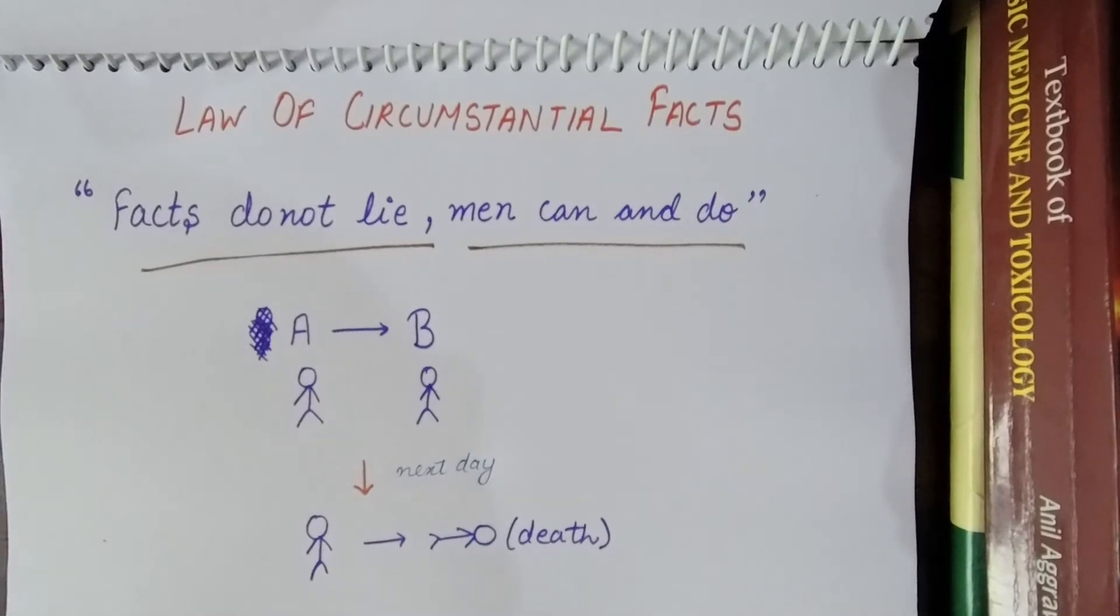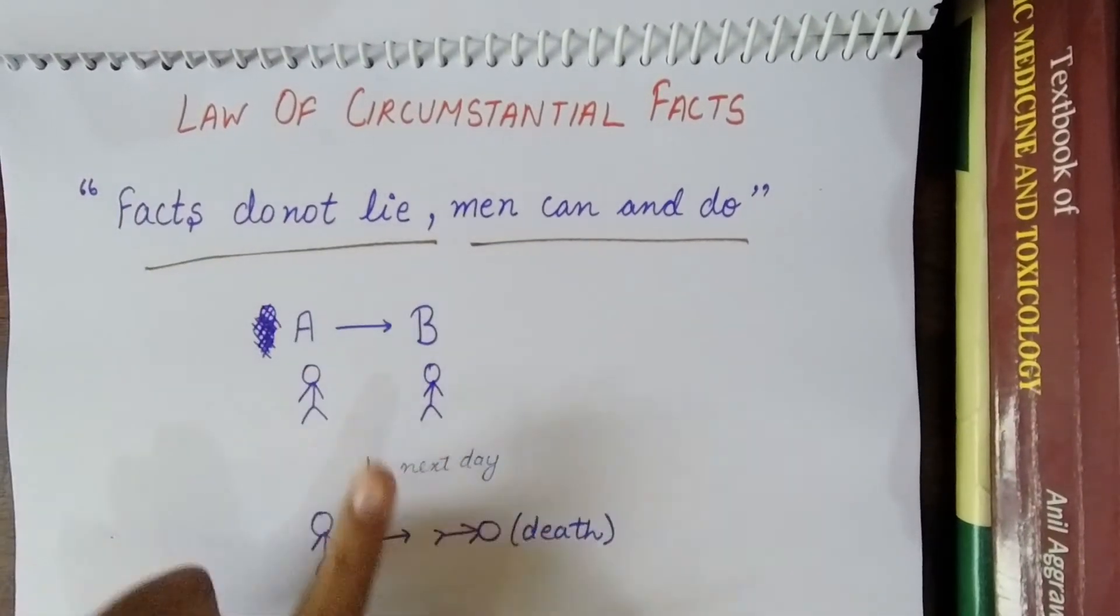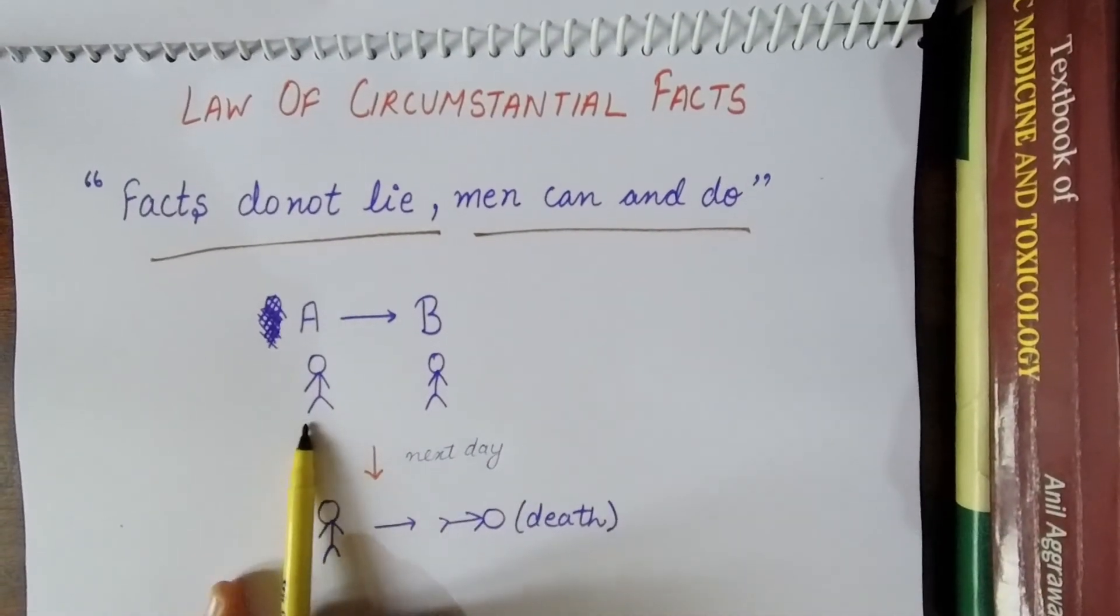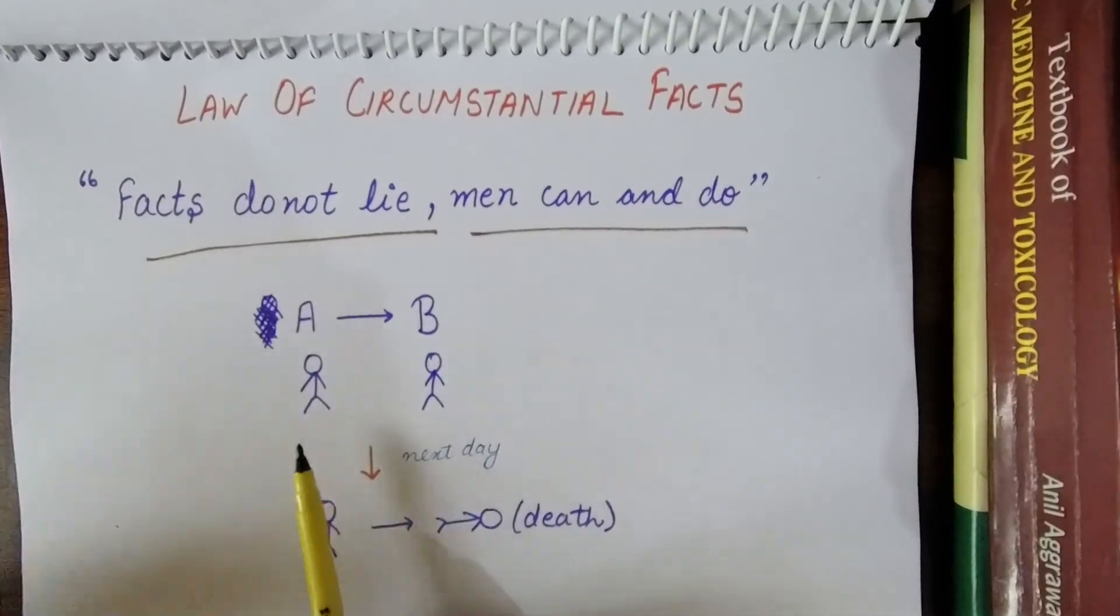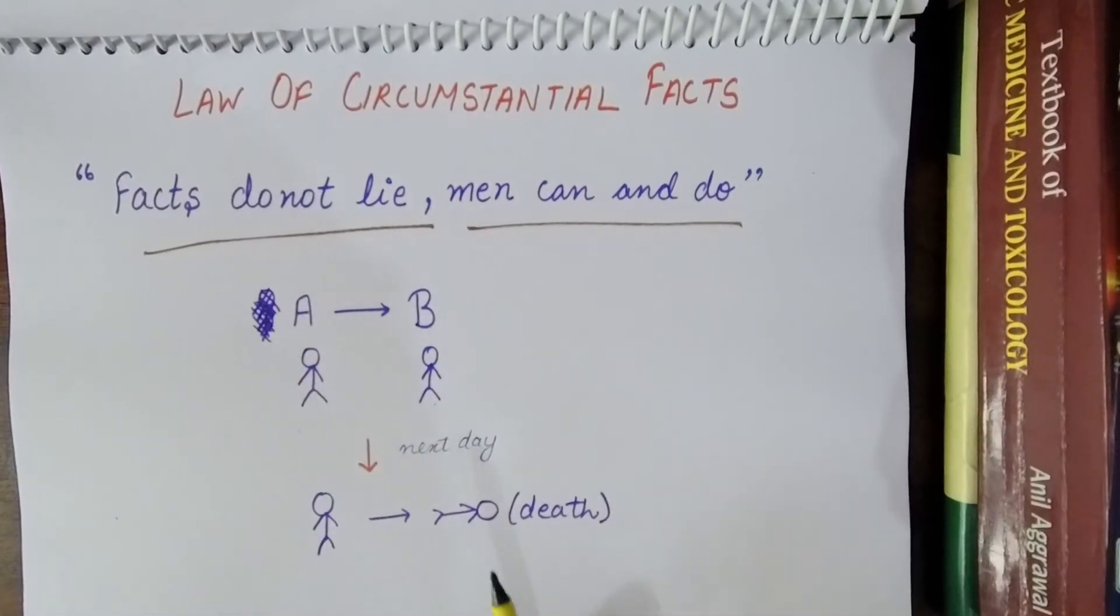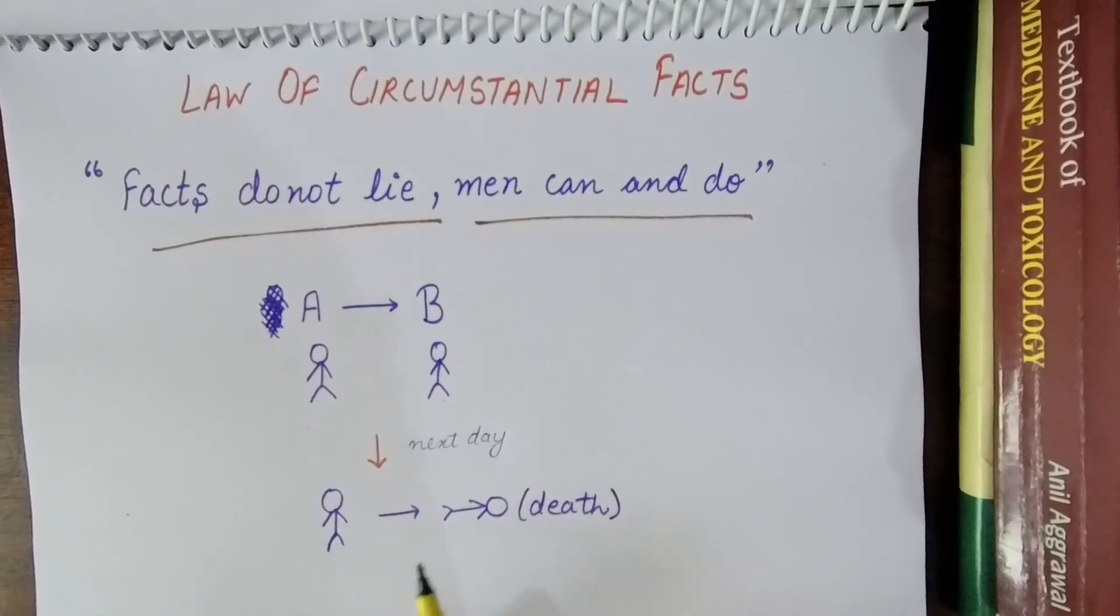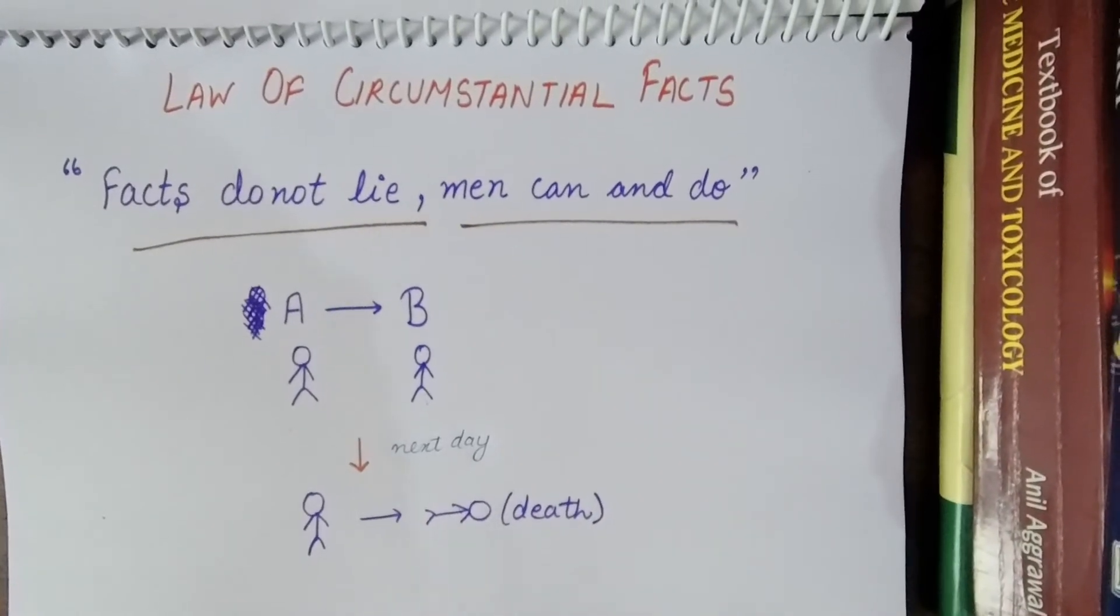So the physical evidence, that may be a fact, and it can never lie. Here I have made a diagram. This shows that suppose a person A has killed B. First A just threatened B that I will kill you. And next day what happened is that police started investigation. B's death happened.